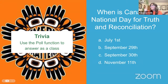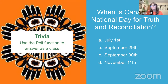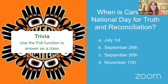My first trivia question for everyone is: when is Canada's National Day for Truth and Reconciliation? You should see a little option pop up on your screen. Our presenter Patricia, you're welcome to answer as well. Is it July 1st, September 29th, September 30th, or November 11th? And good morning and welcome — if you're joining us from YouTube, feel free to type your answers in the YouTube chat and my colleague Sarah will send them over.